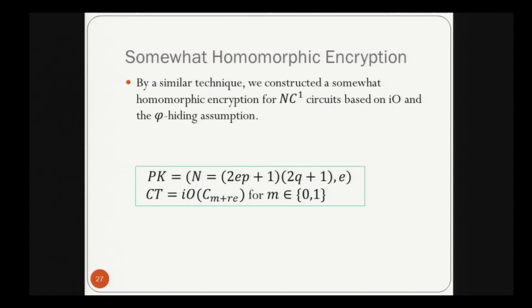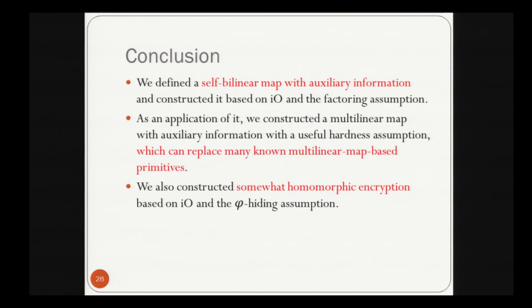In conclusion, we defined self-bilinear maps with auxiliary information and constructed them based on IO under the factoring assumption. As an application, we constructed a multilinear map with auxiliary information with a useful hardness assumption, which can replace many known multilinear map-based primitives. We also constructed somewhat homomorphic encryption based on IO under the phi-hiding assumption.